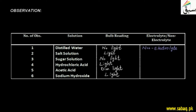For salt solution: we have sodium chloride, so there are sodium ions and chloride ions. Because it gave light, this is an electrolyte. For sugar solution, we have no light because sugar does not give ions in water, so this is a non-electrolyte.